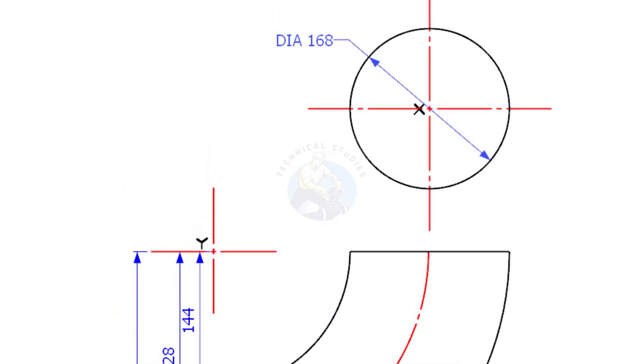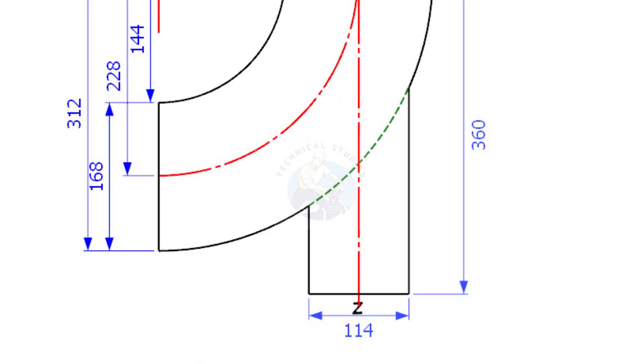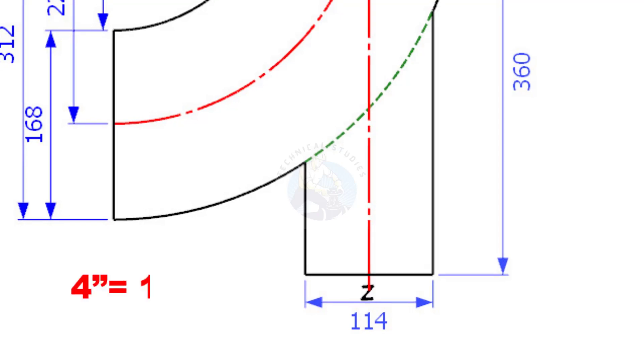Draw the side view on the top as shown. Since the diameter of a 4-inch pipe is 114 millimeters, draw it as shown on both views.